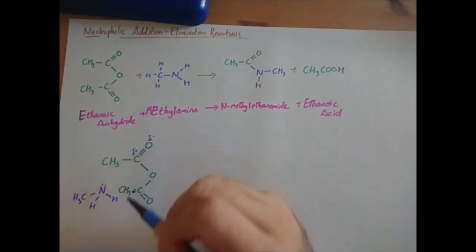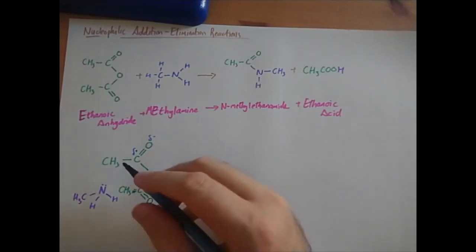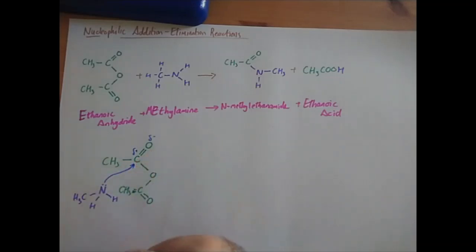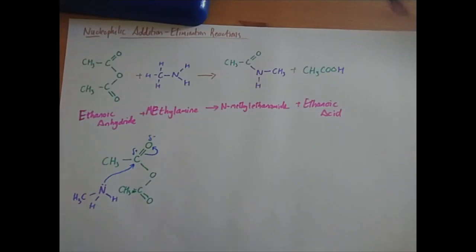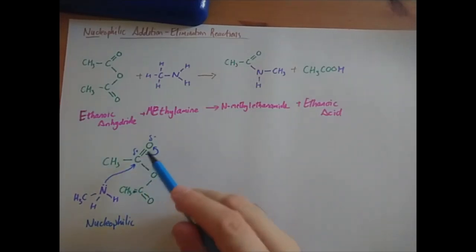So all the partial charges are the same. We're still going to have a delta plus carbon and delta minus oxygen. We don't care about the thing that's singly bonded to the carbon. We're going to have the curly arrow going to attack the carbon and we're going to break the carbon-oxygen double bond. So because we've got a lone pair on the amine going to the delta positive carbon, it's nucleophilic.